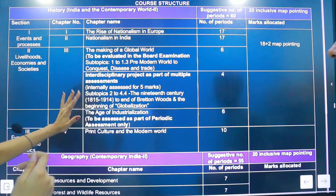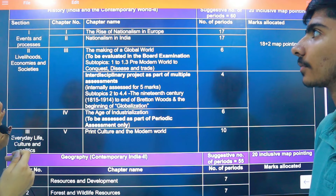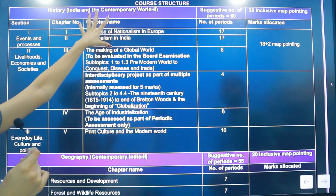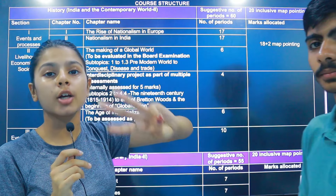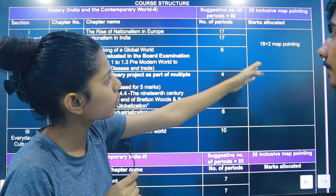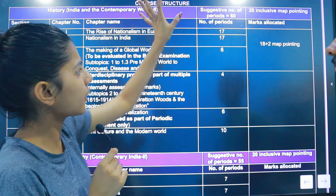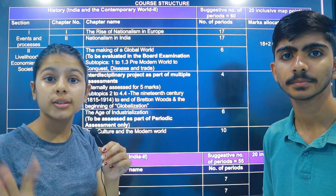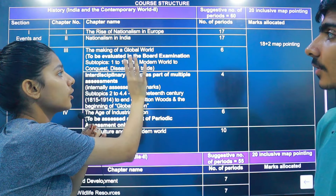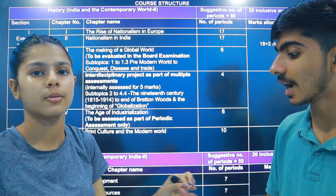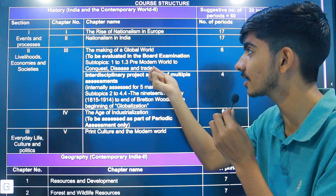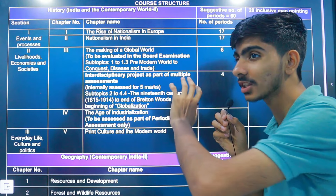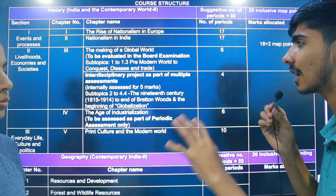Now let's look at Social Science — SST. In History, the first chapter is Rise of Nationalism, and the second is Nationalism in India — both will be complete chapters. There are 4 sections: History, Civics, Economics, and Geography, each worth 20 marks — 18 marks theory and 2 marks map. In the third chapter, only topics 1 to 1.3 will come in the board exam: Pre-Modern World (1.2) and trade as disease spread (1.3). The fourth chapter, Age of Industrialization, is assessed only as part of periodic assessment — it's essentially cut from the board exam.